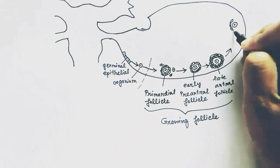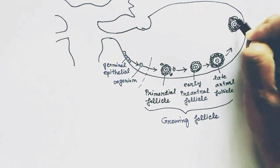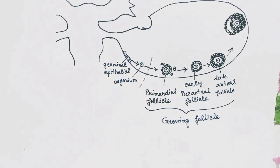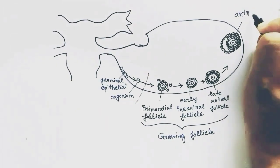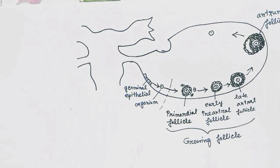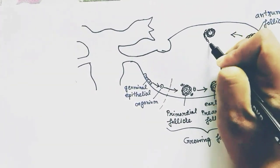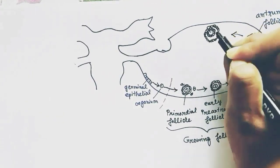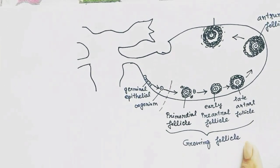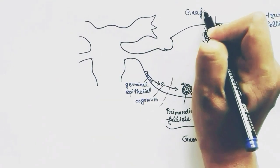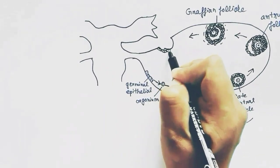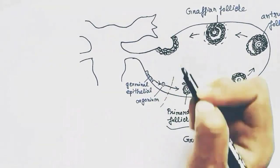The follicular cells then form an antrum, or a cavity, in between the cells. With this antrum, the follicle is called the antrum follicle. The antrum follicle then develops into the most matured follicle, that is the Graafian follicle. The Graafian follicle, after maturation, ruptures and releases the ovum into the fallopian tube.